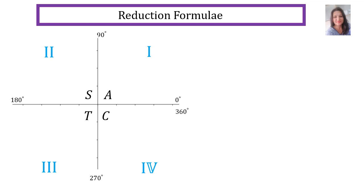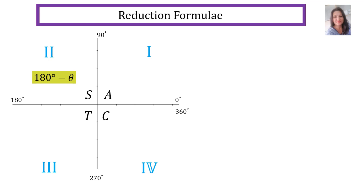The reduction formulas are: 180 minus theta, which lives in the second quadrant; 180 degrees plus theta, which lives in the third quadrant; and 360 minus theta, which lives in the fourth quadrant.